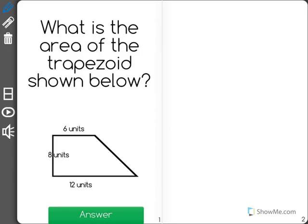What is the area of the trapezoid shown below? Since it's a right trapezoid, one of the things we can do is draw an imaginary line right here to create a right triangle.